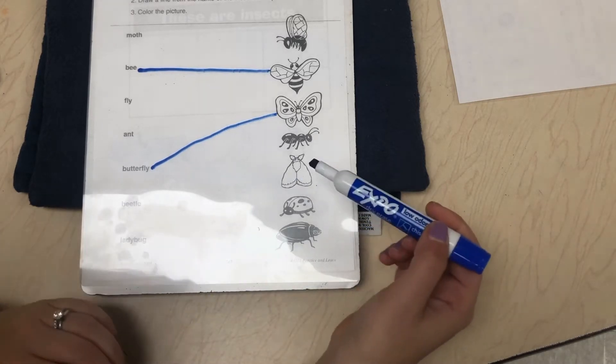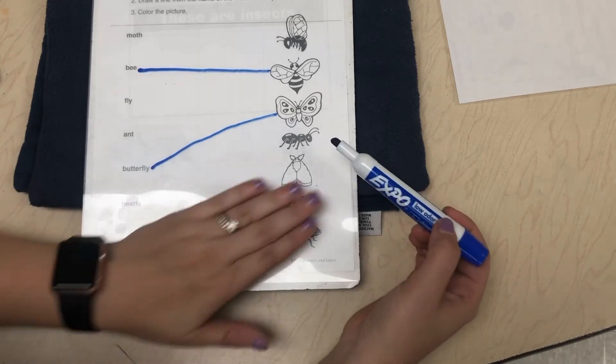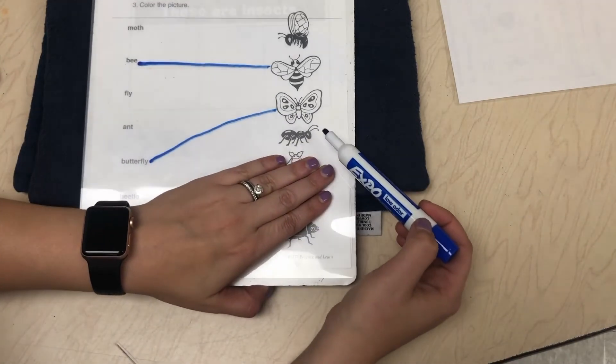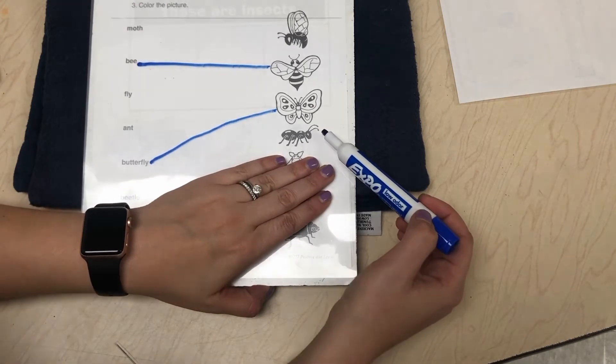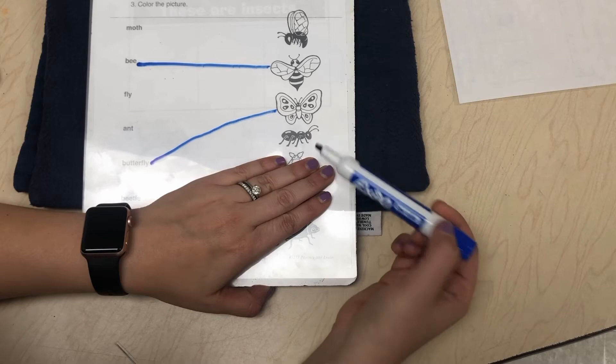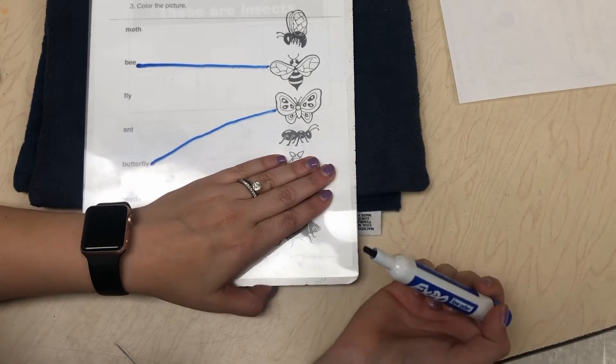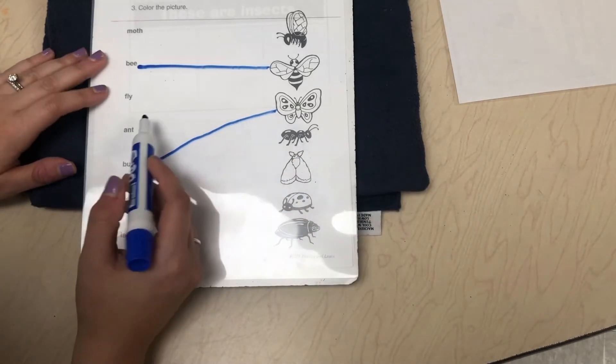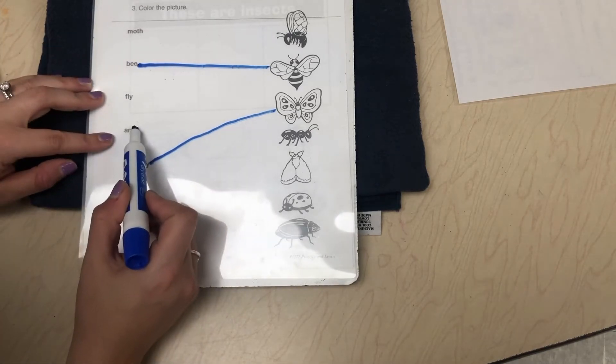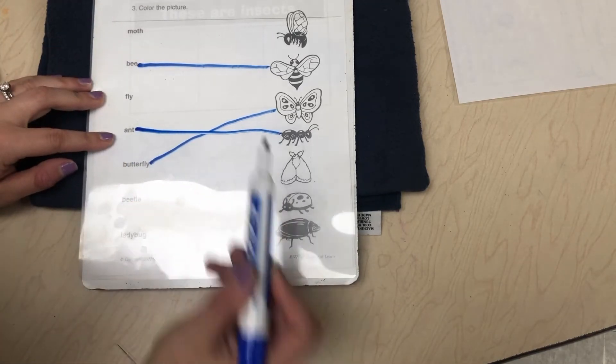You're doing a great job keeping up. Okay, let's move on down here. What does this bug look like? What does this one look like? If you said ant, you are correct. So we're going to find the word ant and we're going to match up with our ant.